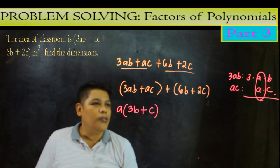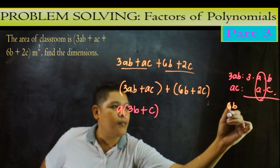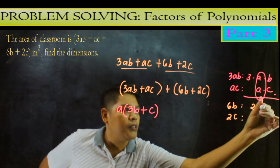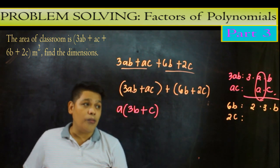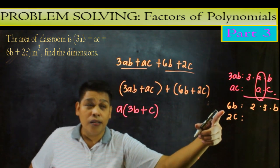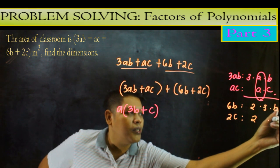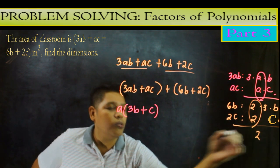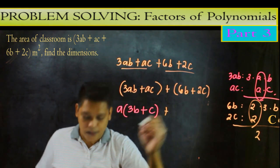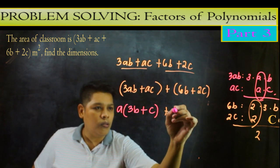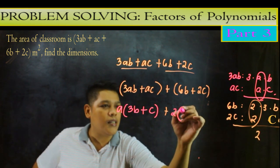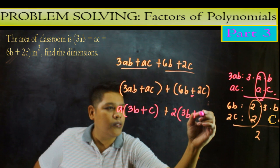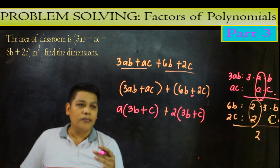Dito naman sa 6b. So 6b plus 2c yung 6b pwede natin isulat yan as 2 times 3 times b Prime factorization. Prime numbers kasi yung 2 tsaka 3 hindi naman prime number yung 6. So 2 ito naman 2 times c. So alin yung parehas sa kanila? Parehas sa kanila ay itong 2. So ibig sabihin plus gagawin natin dito 2 ngayon yung natira dito which is 3 b then copy plus ano yung natira dito? c So ngayon ano yung common sa kanila?